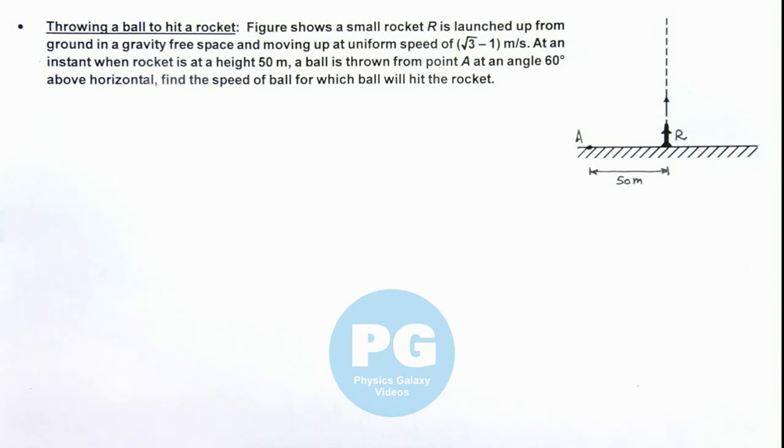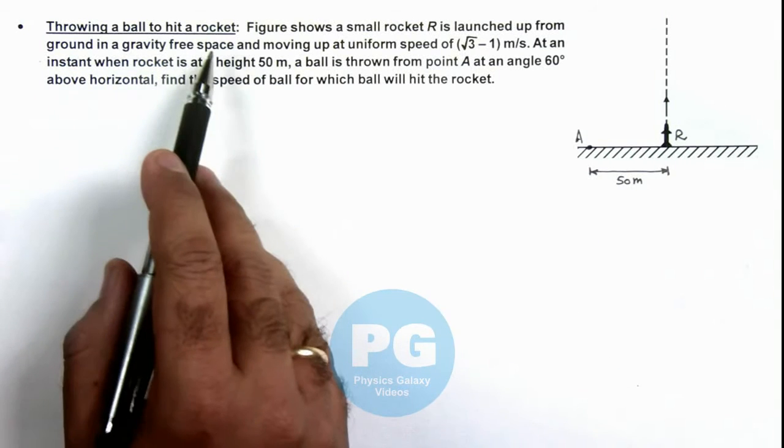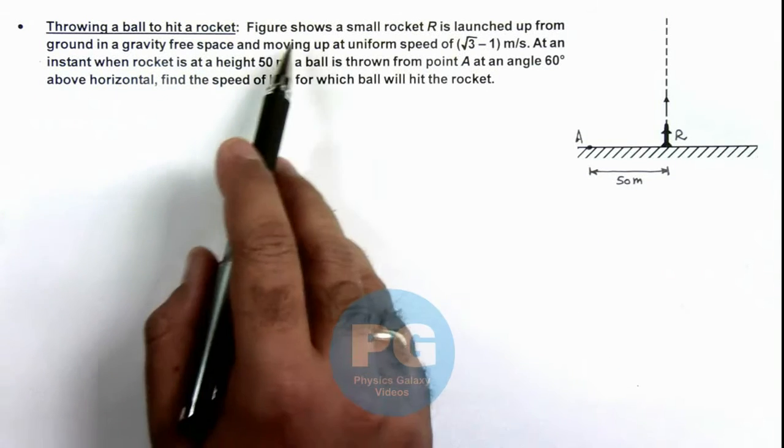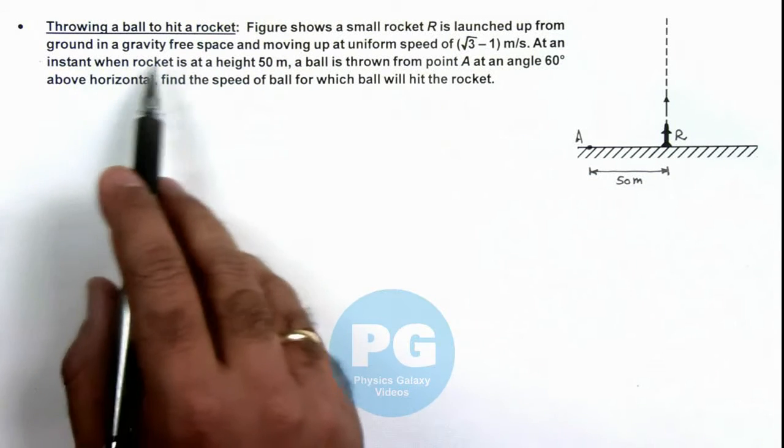In this illustration, we'll study a situation when a ball is thrown to hit a rocket. Here the figure shows a small rocket R which is launched up from ground in a gravity-free space.